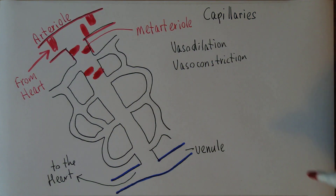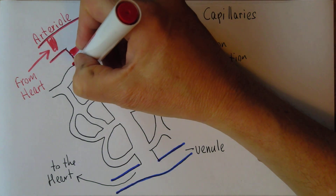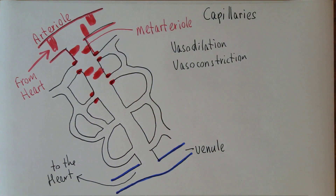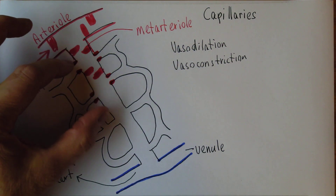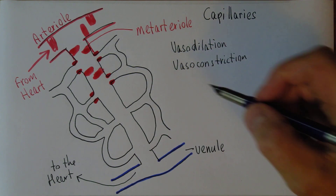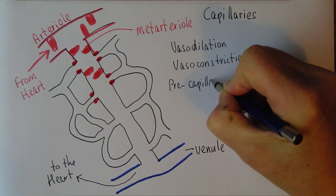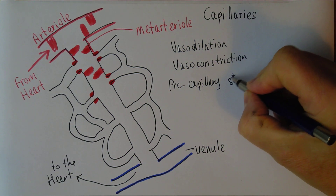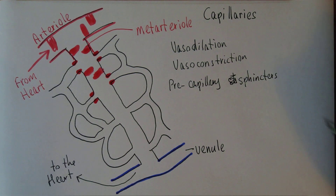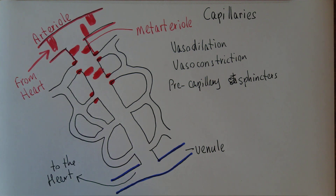At the arterial end we have sphincters regulating the passage of blood. These sphincters can constrict or dilate. Because these sphincters are before the capillaries, they're called pre-capillary sphincters, again controlling the amount of blood that flows through the capillaries.